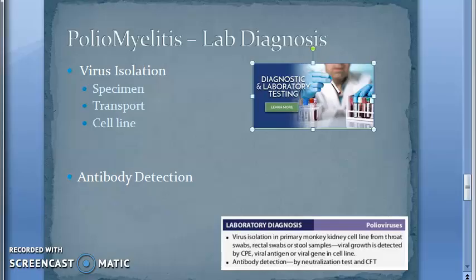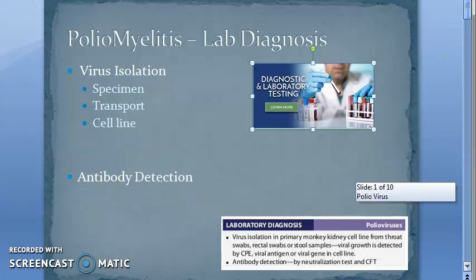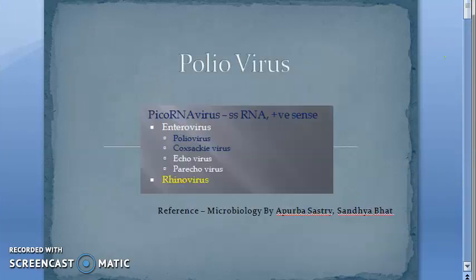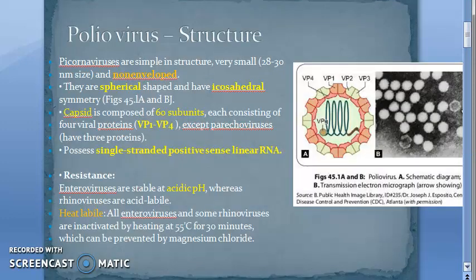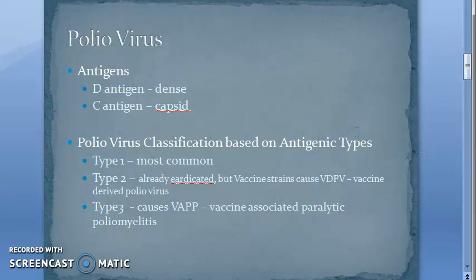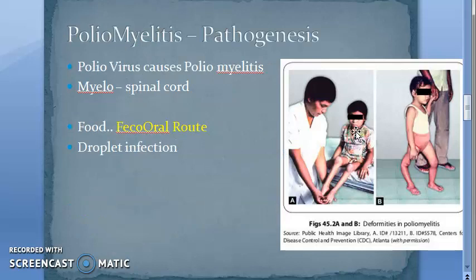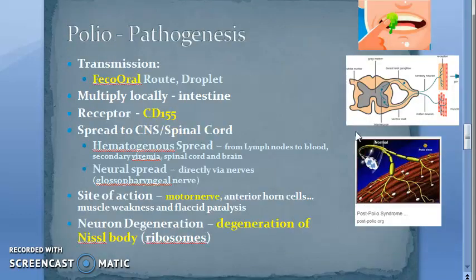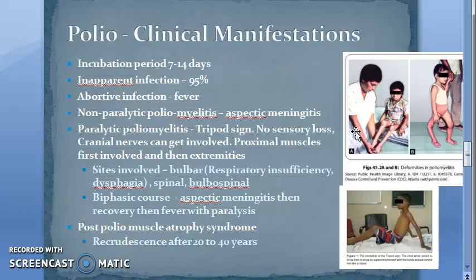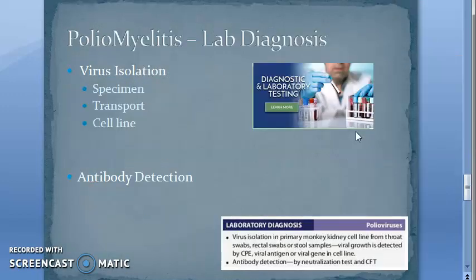In this video we want to look at the lab diagnosis of poliomyelitis, which is very important for exams. So far we have seen that poliovirus is an RNA virus with icosahedral symmetry, linear single-stranded RNA, no envelope, antigens, risk factors, pathogenesis, and clinical manifestations. Now we have come to lab diagnosis.